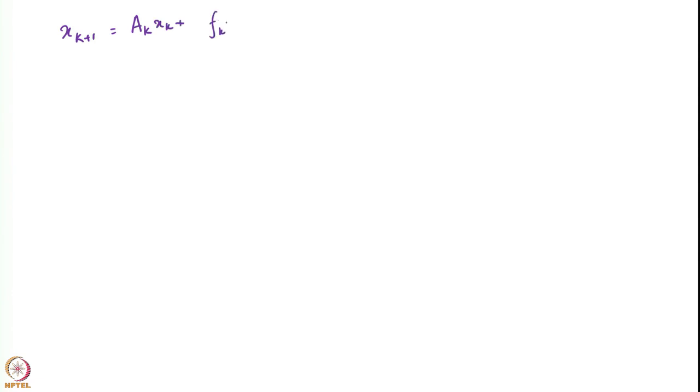The system here is as follows. We have x_{k+1} given as A_k x_k plus F_k u_k plus w_k, and we get observations at any time k as y_k = C_k x_k plus G_k u_k plus v_k.